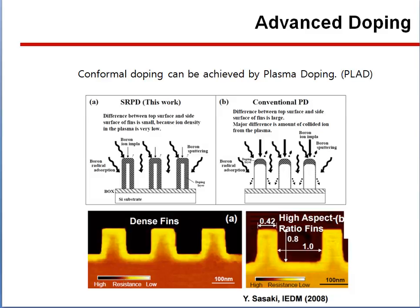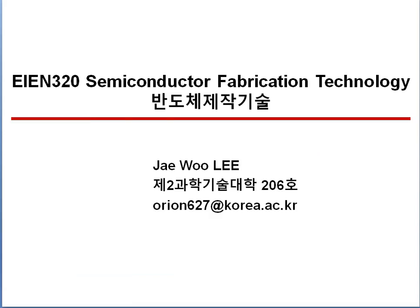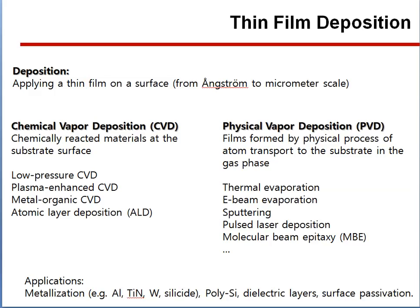Conformal doping can be achieved by plasma doping. Deposition is applying a thin film on a surface.